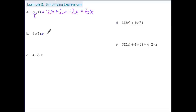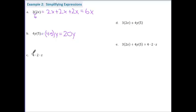For part b, I can use the commutative property to flip the y and the five, giving me four times five times y. Then using the associative property, grouping four times five together gives us 20, and y is still there giving us 20y. For part c, I can use the associative property to group four and two together to give us eight, and z remains, giving us eight z.